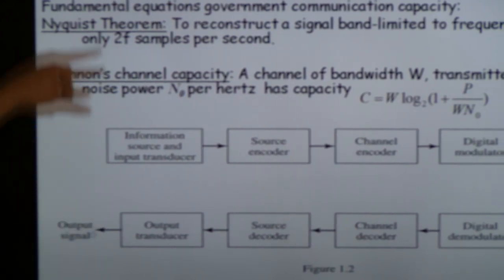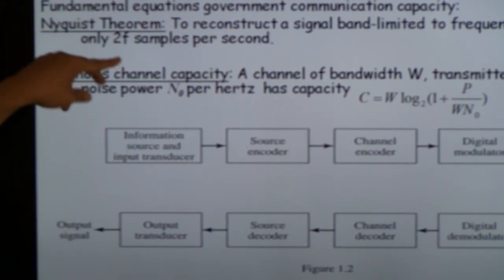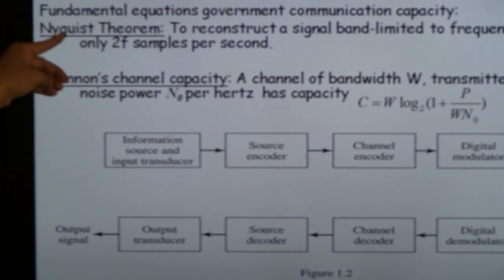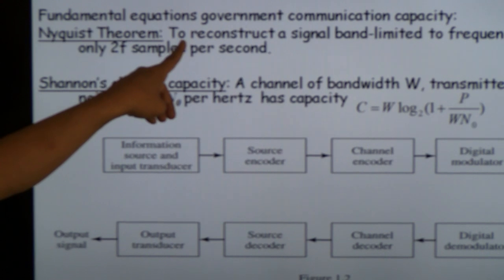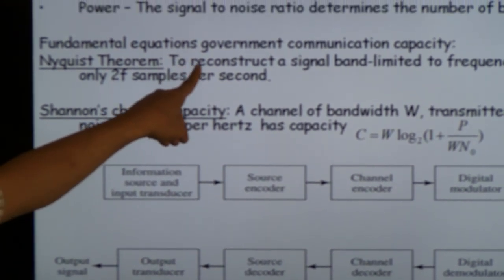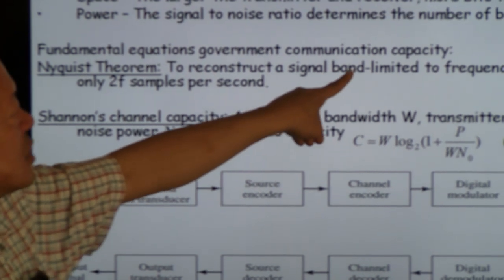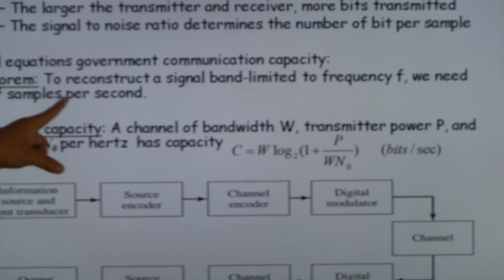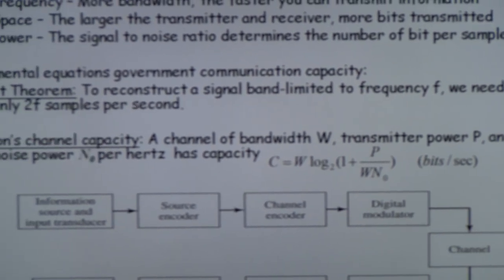As we said before, you would require two basic theories. One, the Nyquist sampling theorem, which is stated here very simply: to reconstruct a signal that is band-limited to a frequency f, we need 2f samples per second.